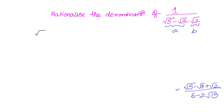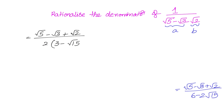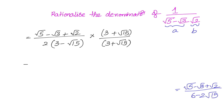Our next step: write (√5 − √3 + √2) divided by 2(3 − √15), factoring out 2 from the denominator. We still need to rationalize, so we multiply numerator and denominator by (3 + √15) over (3 + √15).